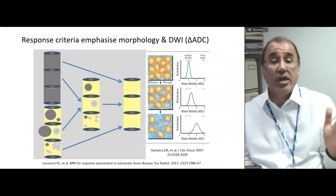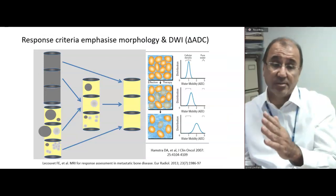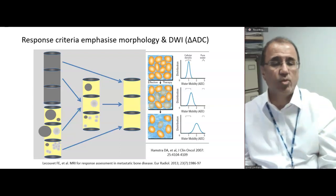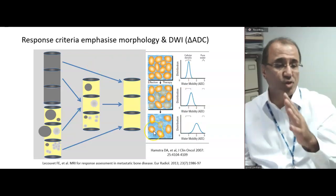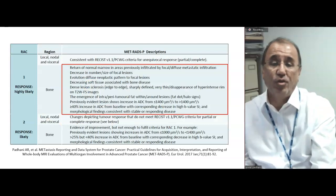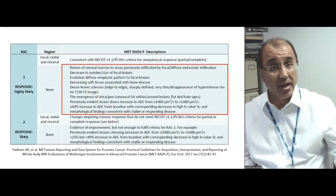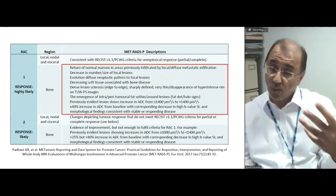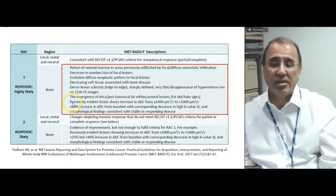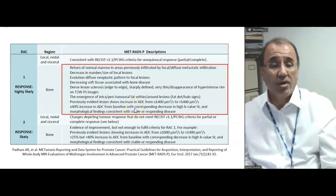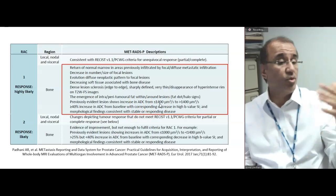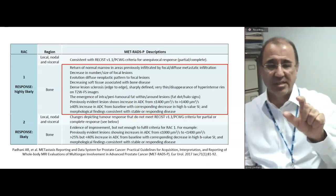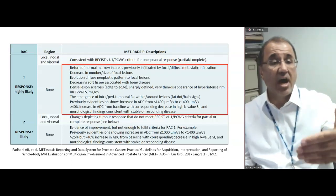On the other hand, if you're looking at response, not only do you have morphological criteria but also ADC criteria. ADC criteria were introduced because as you achieve cell kill, water moves more freely within the tissue. For response highly likely — category one — a return of normal marrow in previously infiltrated areas is expected. But look at the ADC criteria: a 40% increase in ADC from baseline, or an ADC that went from less than 1400 to more than 1400.